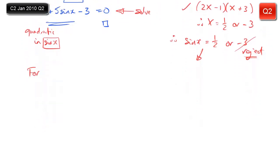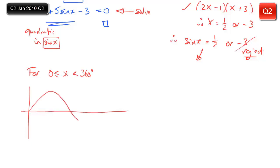I simply need to concentrate on solving sinx equals ½. So I can draw myself the graph of sinx. The range we're given is 0 to 360. That graph should come really easily to you by now - it doesn't have to be perfect, just have to have roughly the right shape. Put on the key features: 360, 180, the maximum value is 1. Label my axes just for good measure.